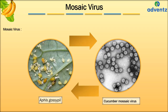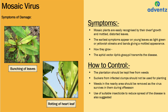The next disease is Mosaic Virus, which results from Cucumber Mosaic Virus transmitted by Aphis gossypii. Mosaic plants are easily recognized by their dwarf growth and mottled distorted leaves. The earliest symptoms appear on young leaves as light green or yellowish streaks and bands giving a mottled appearance. Symptoms visible on screen include bunching of leaves and rotting of the heart leaf. To control Mosaic Virus: keep the plantation free from weeds; do not use suckers from infected clumps; remove weeds in nearby areas as the virus survives in them during off-season; and use suitable insecticides to reduce the spread of the disease. This concludes our module on pests and diseases of the banana plantation.